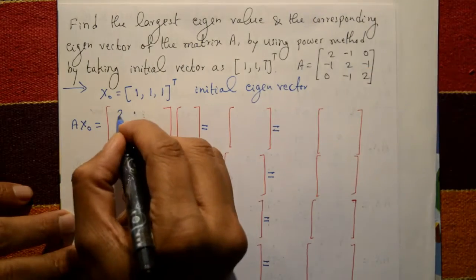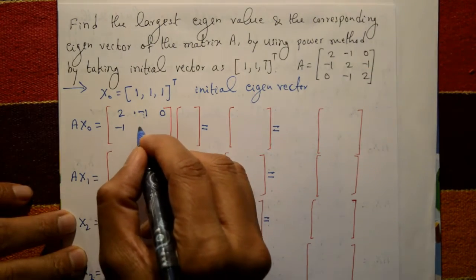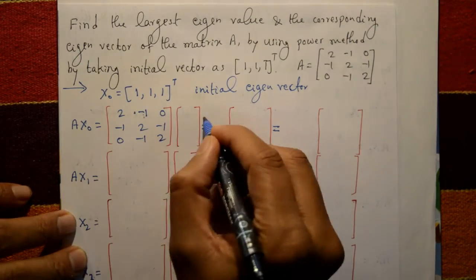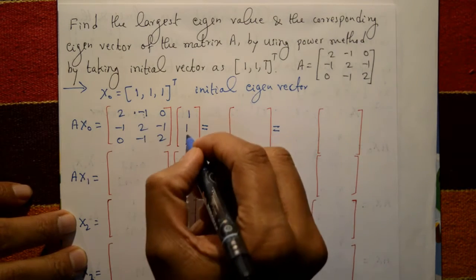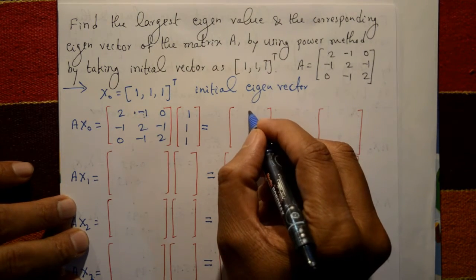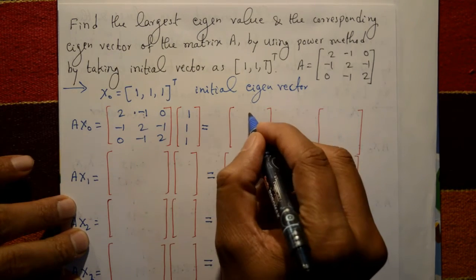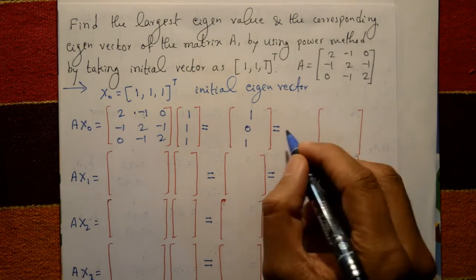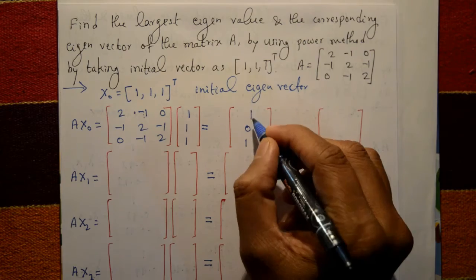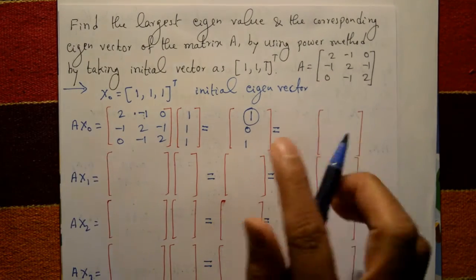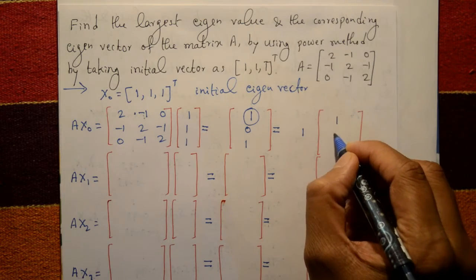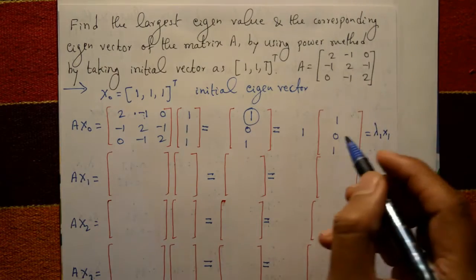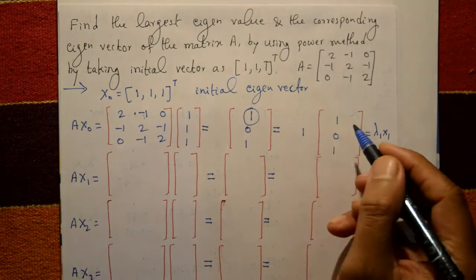Compute A × x0: matrix A is [[2,-1,0],[-1,2,-1],[0,-1,2]] and x0 = [1,1,1]ᵀ. After matrix multiplication, the result is [1, 0, 1]. We take 1 outside — this technique is called normalization — giving λ₁ and x1 = [1, 0, 1].